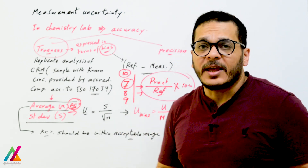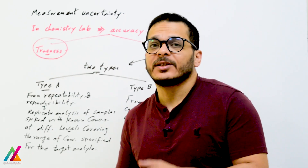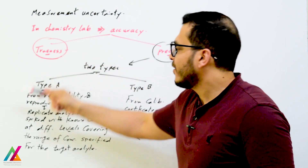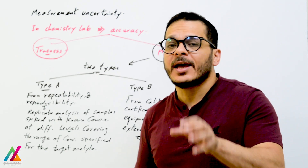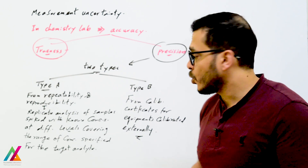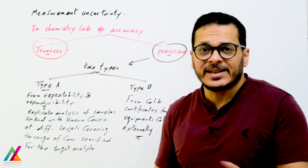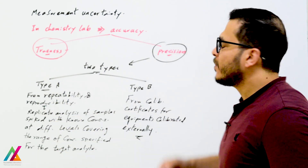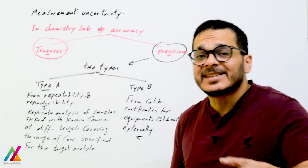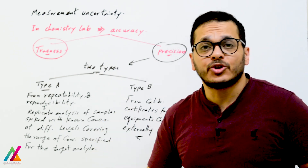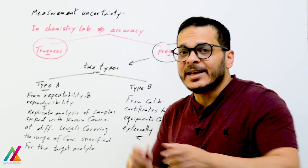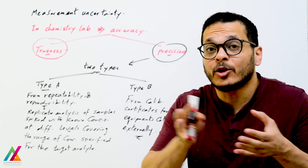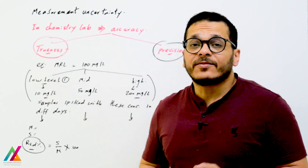For precision, it is estimated from repeatability and reproducibility. There are two types of evaluation: Type A and Type B. Type A evaluation comes from repeatability and reproducibility through replicate analysis of samples spiked with known concentration of target analytes at different levels. Type B evaluation comes from calibration certificates for externally calibrated equipment used during the whole measurement process — the certificate includes measurement uncertainty that is also added to the combined uncertainty.